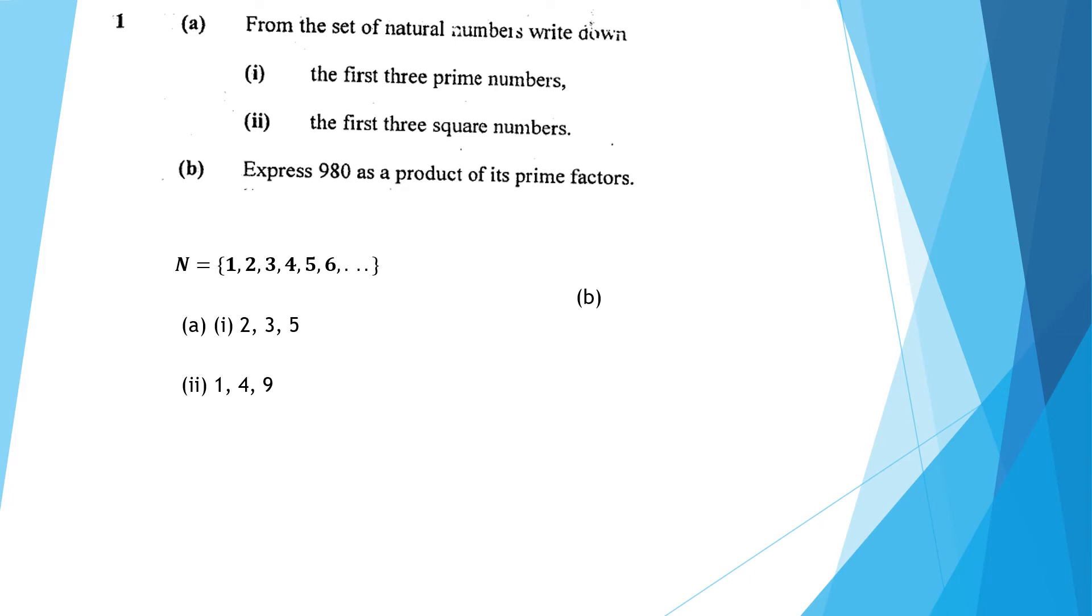The first prime number is 2. So 980 is divided by 2 to give 490. 490 is further divided by 2 to get 245.